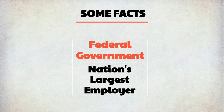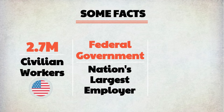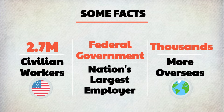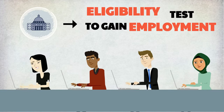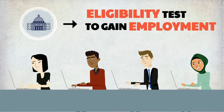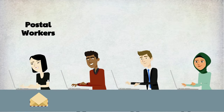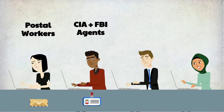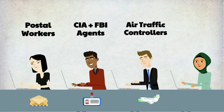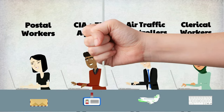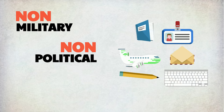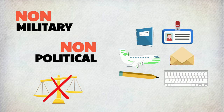First off, some facts. The federal government is the nation's largest employer with more than 2.7 million civilian workers in the United States and thousands more overseas. These employees must pass a civil service exam or an eligibility test to gain employment in specific government agencies. These could be postal workers, CIA or FBI agents, air traffic controllers, or clerical workers, just to name a few.